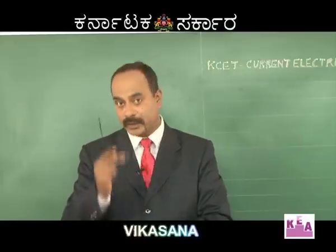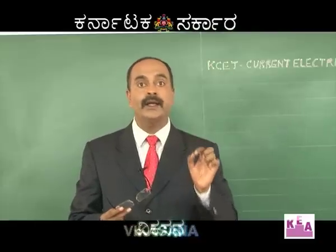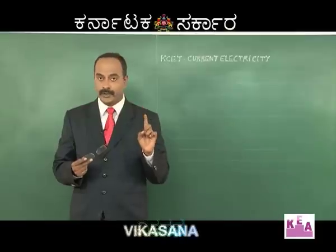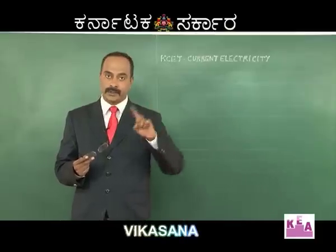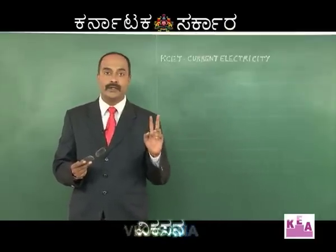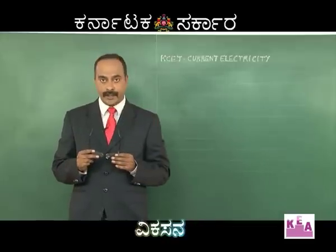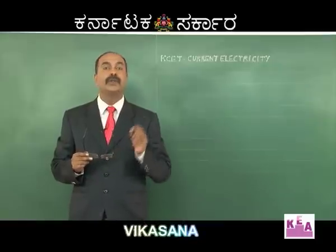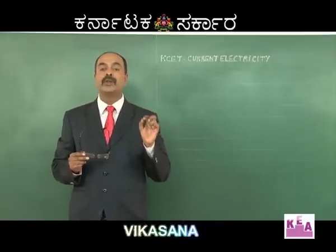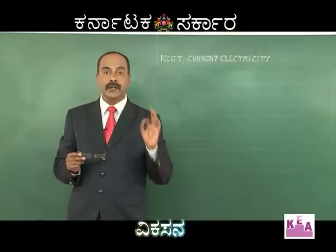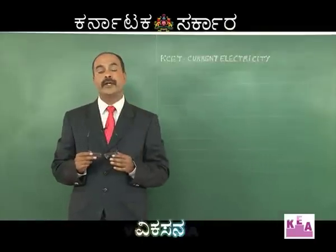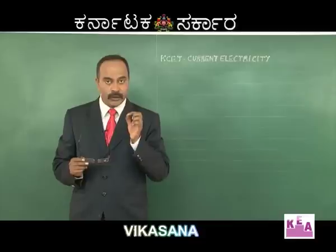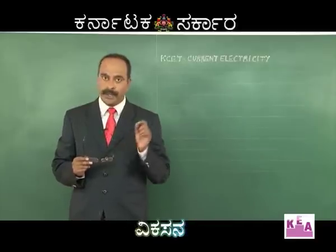The important shortcut and logic here is that the series equivalent resistance is also less than or equal to twice the greatest resistor — very, very important. If two resistors are connected in series, the equivalent resistance is greater than the biggest and less than or equal to twice the greatest. Similarly, if two resistors are connected in parallel, the equivalent resistance is definitely less than R1 (the smaller resistor), but greater than or equal to R1 divided by 2. Please make a note of this.